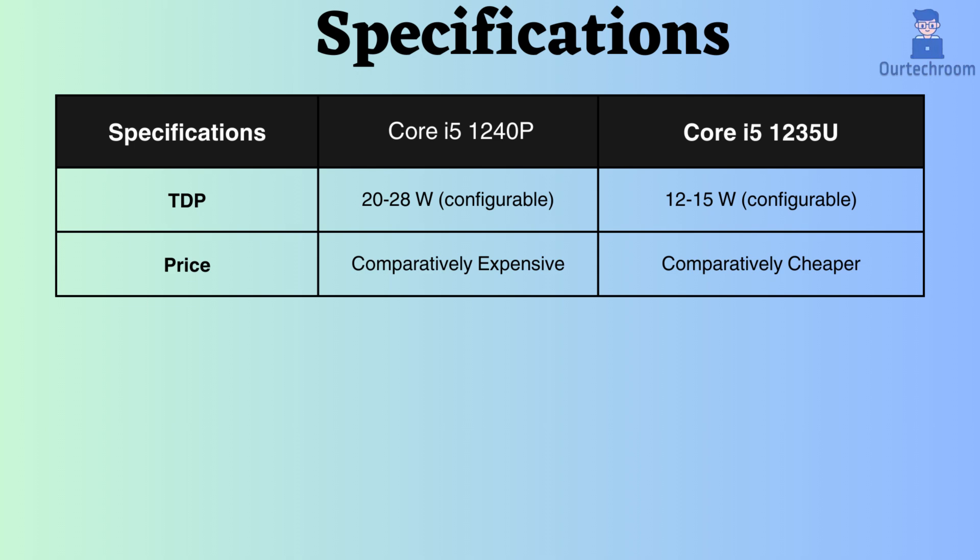In terms of pricing, the Core i5-1240p is comparatively more expensive than the Core i5-1235u. A benchmark comparison including Cinebench R23 single and multi-core, Geekbench V6 single and multi-core, and Passmark single and multi-core reveals that the Core i5-1240p performs better overall.